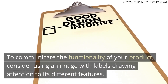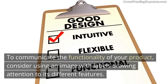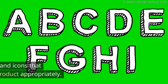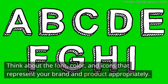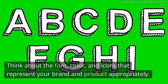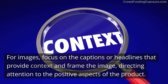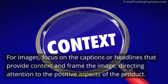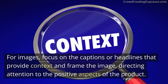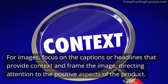To communicate the functionality of your product, consider using an image with labels drawing attention to its different features. Think about the font, color, and icons that represent your brand and product appropriately. For images, focus on the captions or headlines that provide context and frame the image, directing attention to the positive aspects of the product.